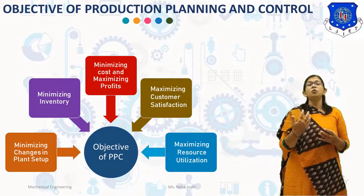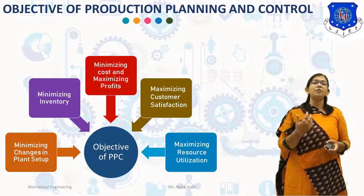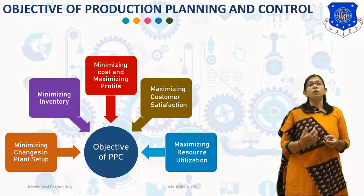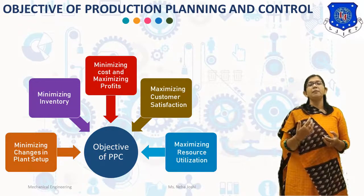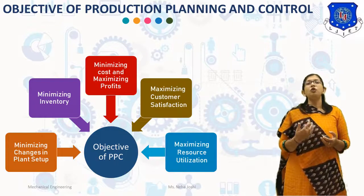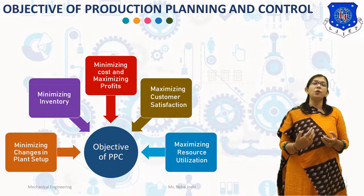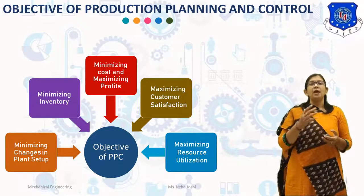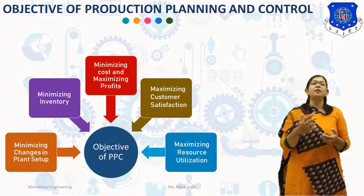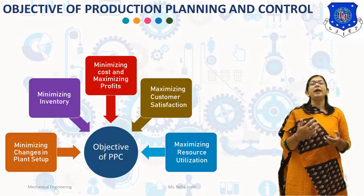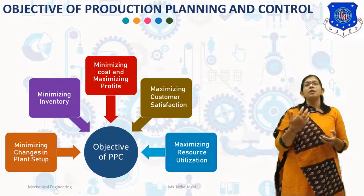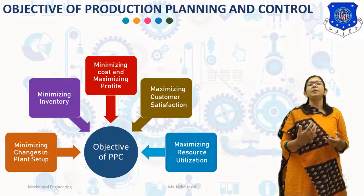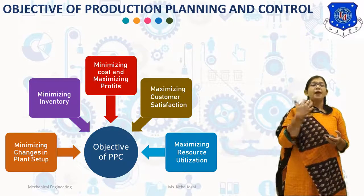The PPC team should take into account the strength and weakness of the existing planning setup while planning. The fourth objective is minimizing change in planning setup. While planning for a new product or business, the PPC Department should aim at minimizing the change in plant setup like factory layout, machinery and workforce. The new business or project should be planned such that it can be implemented with minimum addition of resources.